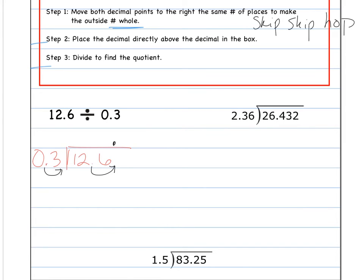Three goes into twelve, four times, with a difference of zero. Bring down my six. Three goes into six, two times, with none remaining. And that can just be written as a difference of, or a quotient of, forty-two.